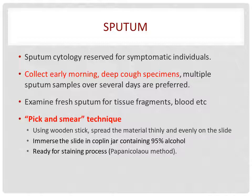Let's start with the sputum. Sputum is one of the most common respiratory tract cytology specimens, because it is relatively easy to obtain and causes little if any discomfort. However, today, sputum cytology is generally reserved for symptomatic individuals. For sample collection, early morning deep coughed specimens and multiple sputum samples over several days are preferred. Then, examine the fresh sputum for tissue fragments, blood, or both.